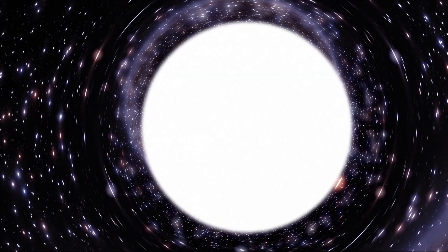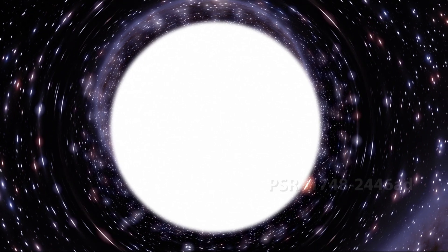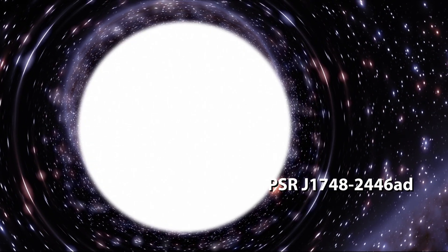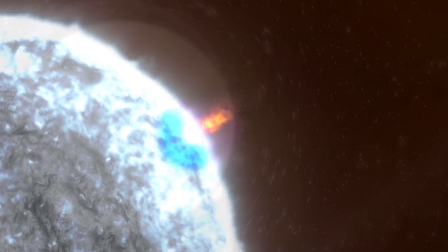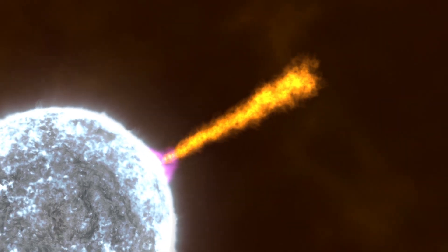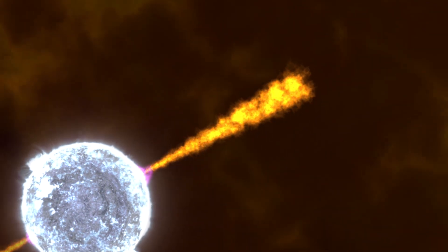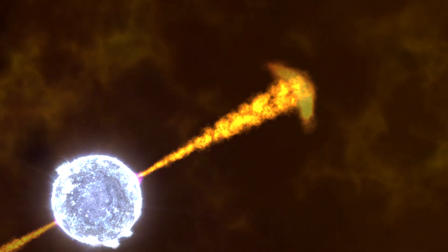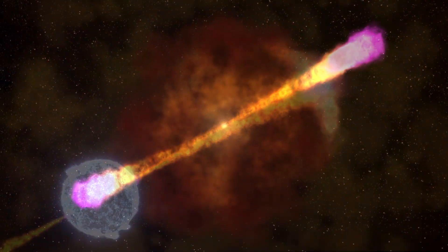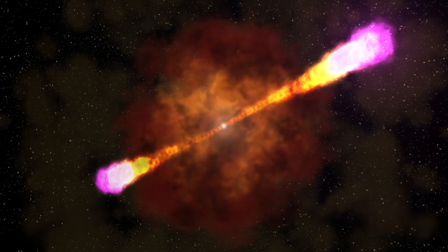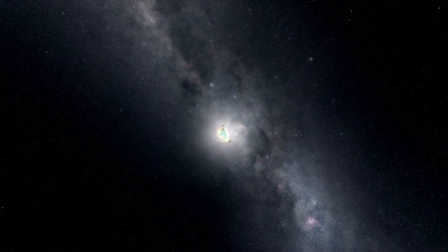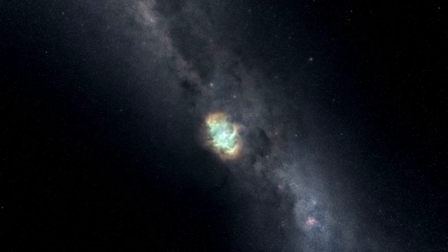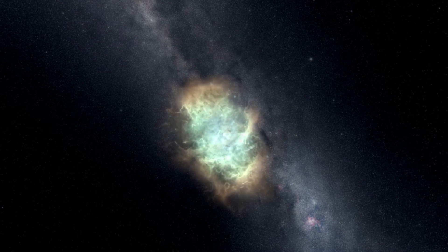The fastest spinning pulsar is called PSR J1748-2446AD. Pulsars are spinning neutron stars that sling lighthouse beams of radio waves or light around as they spin. A neutron star is what is left after a massive star explodes at the end of its normal life.